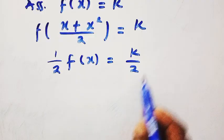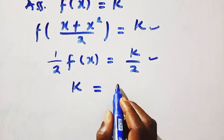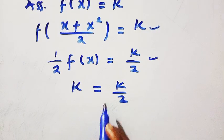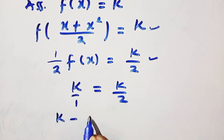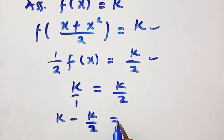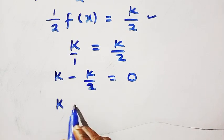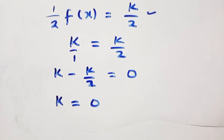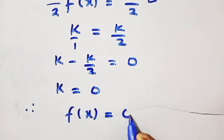By equating these two, we let k equals k over 2. Looking at this, we have k minus k over 2 equals 0. This shows that k equals 0. And if k equals 0, this is the only constant solution that we have. Therefore, f of x equals 0.